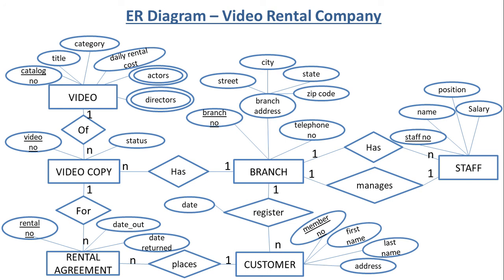A branch has only one manager and a manager manages only one branch. A branch has many customers, but a customer registers with only one branch. A customer can place multiple rental agreements, but a rental agreement is associated with only one customer. A rental agreement is for only one copy, and a copy is associated with multiple rental agreements. This is our final solution.